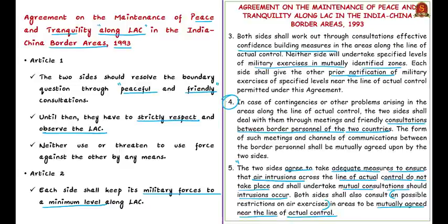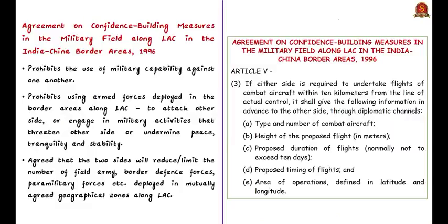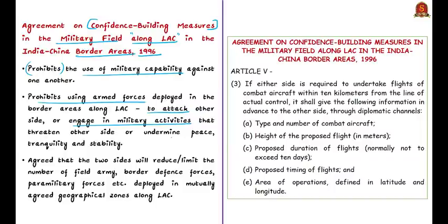Simply put, through this 1993 agreement both sides agreed to maintain peace and tranquility in the areas of the LAC, which is being currently breached by China. The second important agreement is the 1996 Agreement on Confidence Building Measures in the Military Field along the Line of Actual Control in the India-China Border Areas. It is an elaborate agreement that bars or prohibits the use of military capability against one another, and bars using armed forces to attack the other side or engage in military activities that threaten the other side or undermine peace, tranquility, and stability in the border areas.